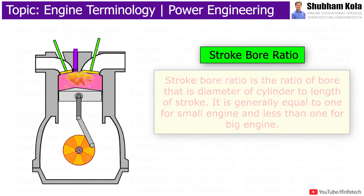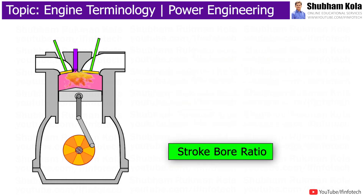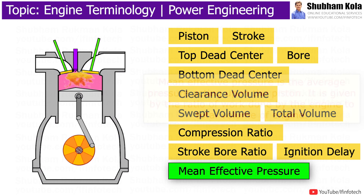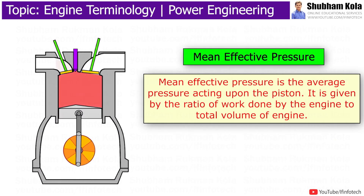The stroke-bore ratio is the ratio of bore, that is the diameter of the cylinder, to the length of stroke. It is generally equal to 1 for small engines and less than 1 for big engines. The mean effective pressure is the average pressure acting upon the piston, given by the ratio of work done by the engine to total volume of the engine.